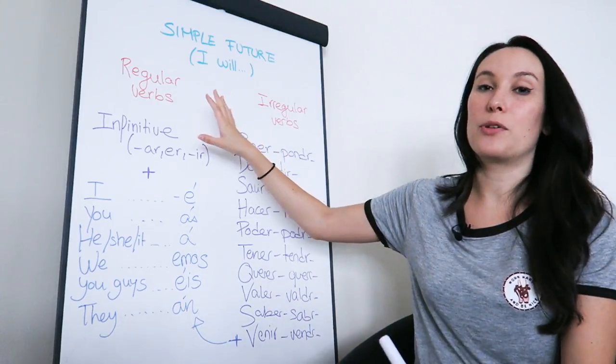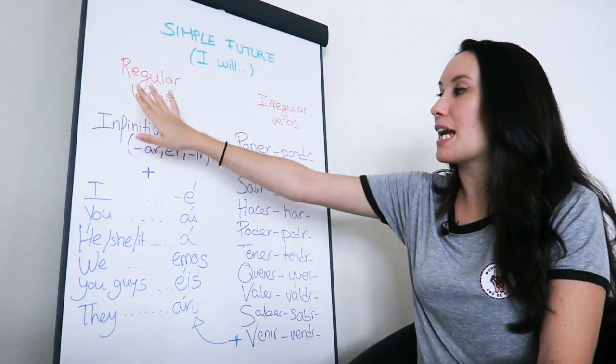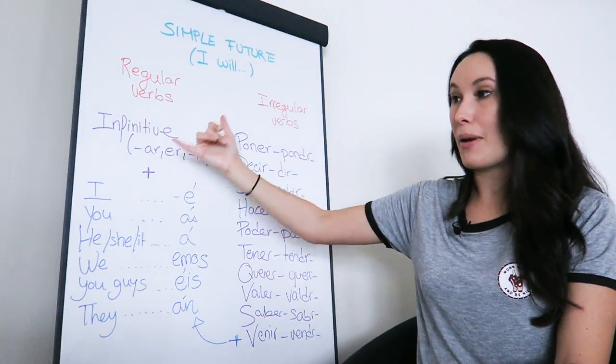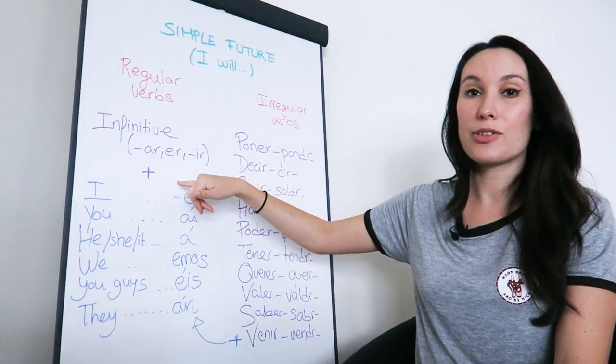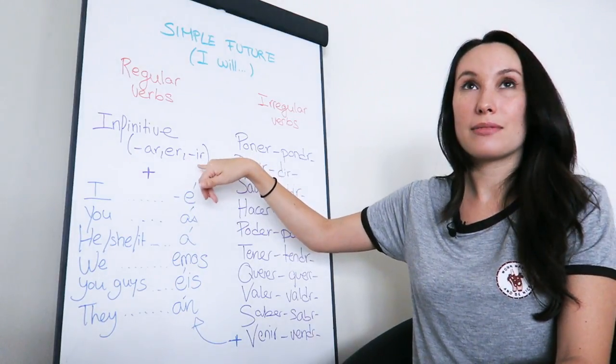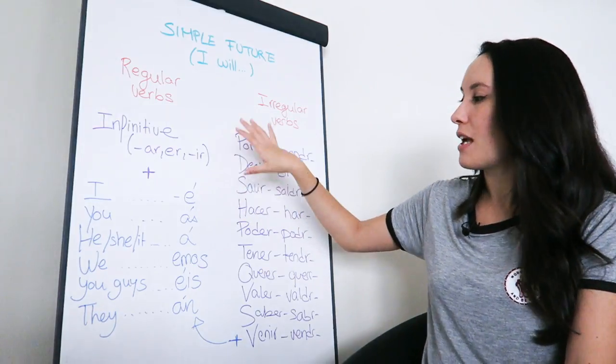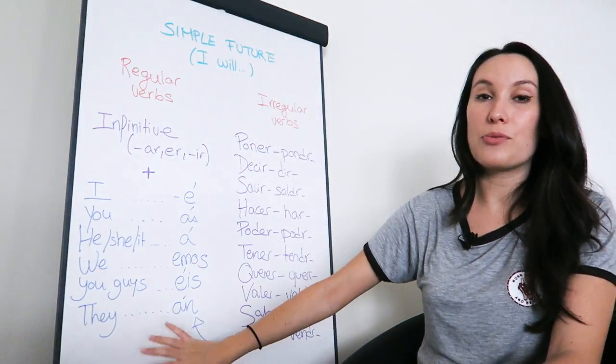So with the regular verbs, it's really easy. We have the infinitive, so to do something. For example, hablar, to talk, comer, to eat, beber, that's an error as well, vivir, to live, and we're going to finish that with these endings.